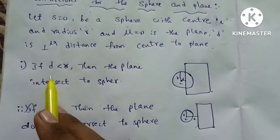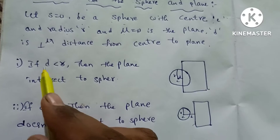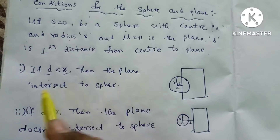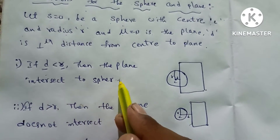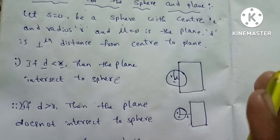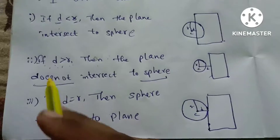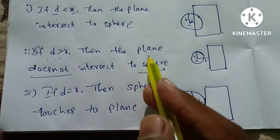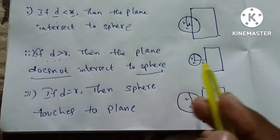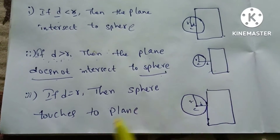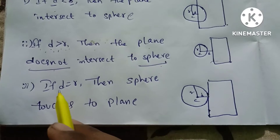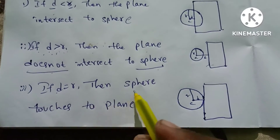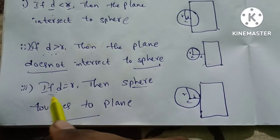Firstly, if D is less than R, the perpendicular distance is less than the radius, then the plane intersects the sphere. If D is greater than R, then the plane does not intersect the sphere. If D is equal to R, then the sphere touches the plane.